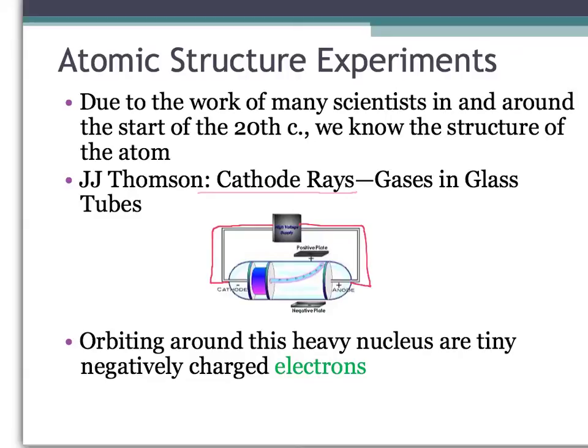And so he caused there to be a charge difference moving through these gases. And what he found every single time, regardless of the type of gas that he used, was this ray, he called it a cathode ray, was produced. So he got this bright beam of light, sort of like what you might imagine a laser to look like. He got this bright beam of light that went through the tube horizontally.